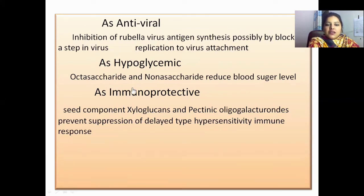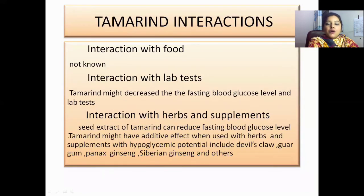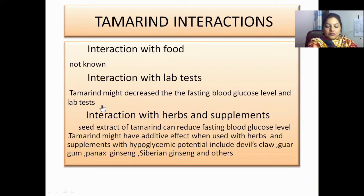These are the ingredients of tamarind. It is also immunoprotective — seed components such as xyloglucans and pectin oligogalacturonides prevent the suppression of delayed-type hypersensitivity immune response. Regarding tamarind interactions: interaction with food is not known. Interaction with lab tests — tamarind might decrease fasting blood glucose level. Interaction with herbs and supplements — seed extract of tamarind can reduce fasting blood glucose level.